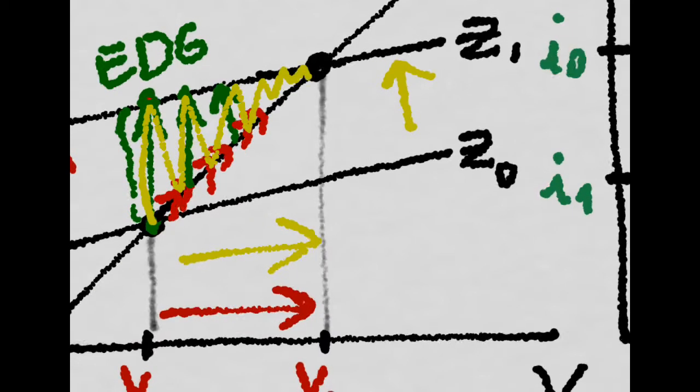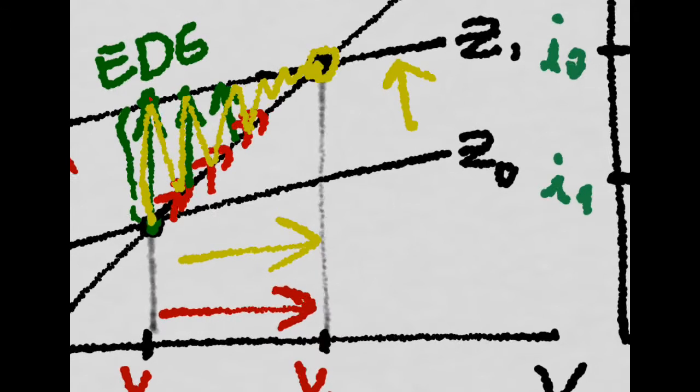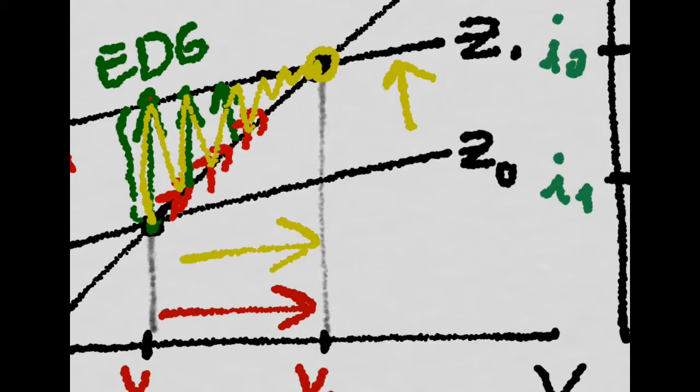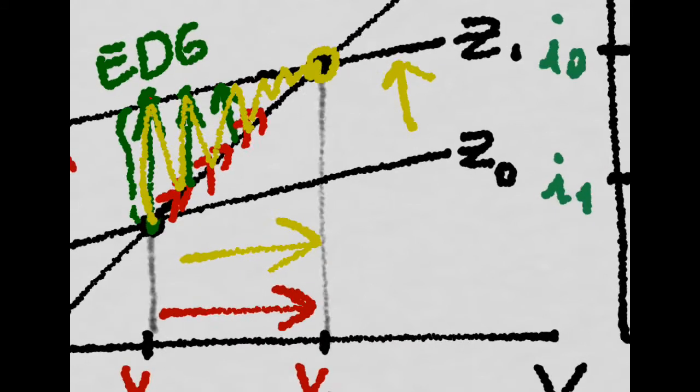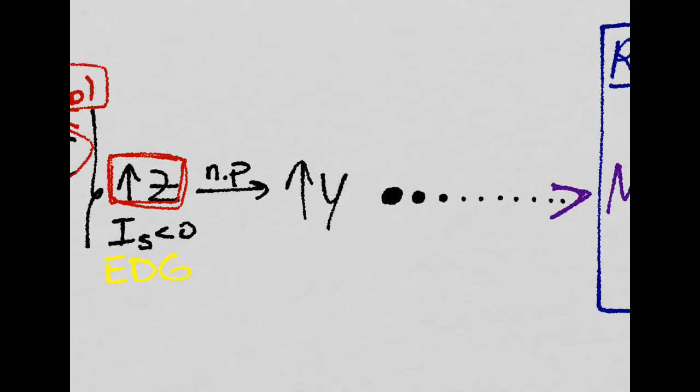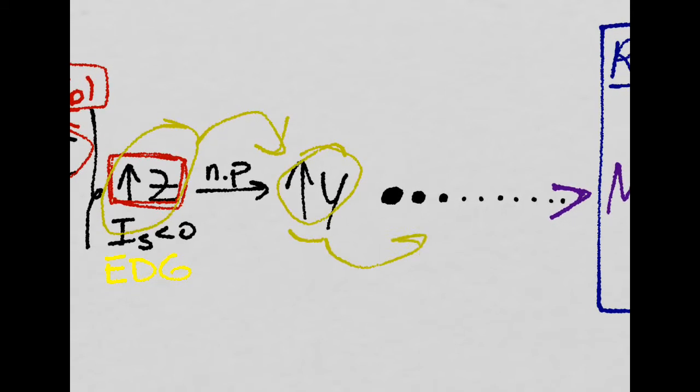This process that you can see goes like this. Until it means a new equilibrium is what we call the multiplier. The multiplier effect. You see, more demand, that brings more supply. That brings more income. That brings more aggregate demand.